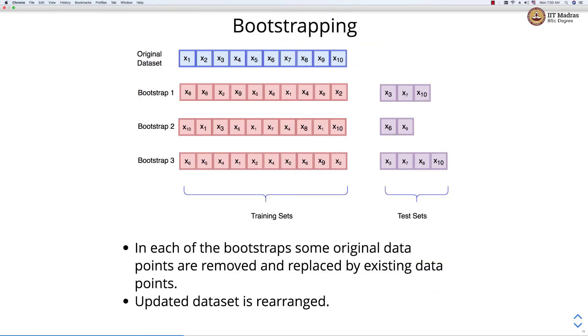The key idea here is that in each bootstrap some original data points are removed and replaced by existing data points and updated data set is rearranged. Concretely, let's say there is an original data set with 10 different points. In the first bootstrap, we select 10 points with replacement from the original data set and the points that are not selected in the bootstrap are set aside in the test set.